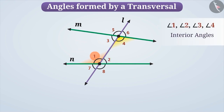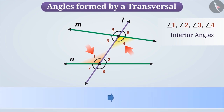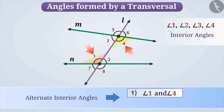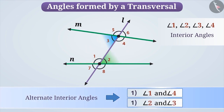If we talk about angle 1 and angle 4, they are interior angles, their vertex is different, and they are on the opposite sides of the transversal. Therefore, such angles are called alternate interior angles. Similarly, angle 2 and angle 3 are also a pair of alternate interior angles.